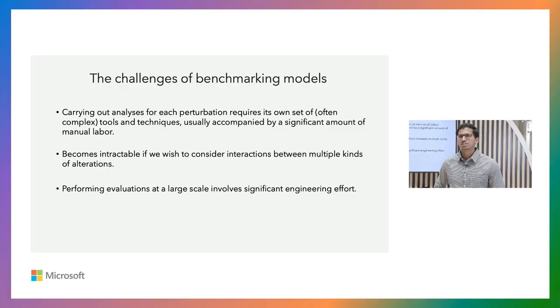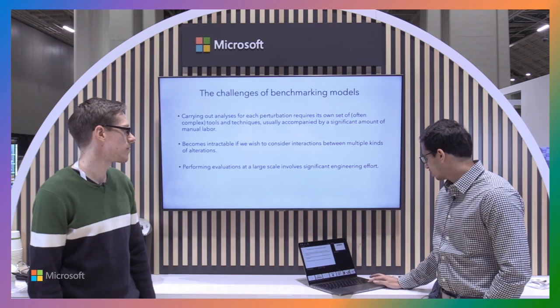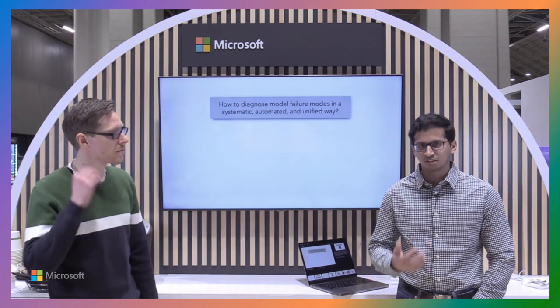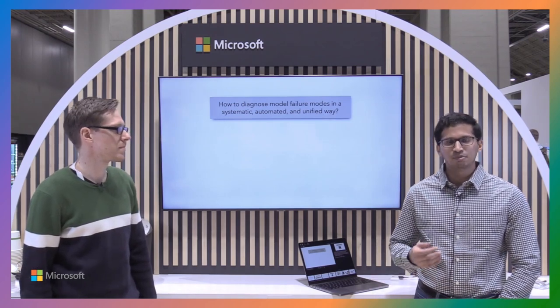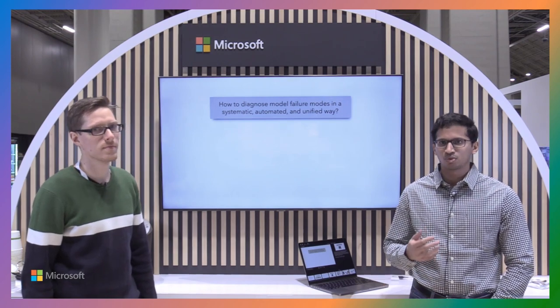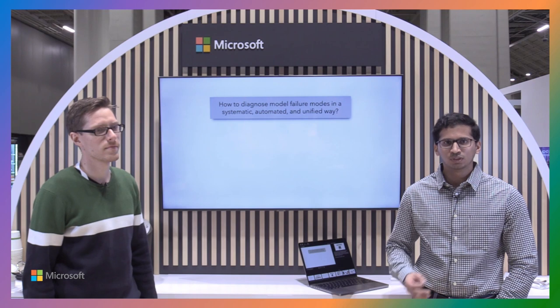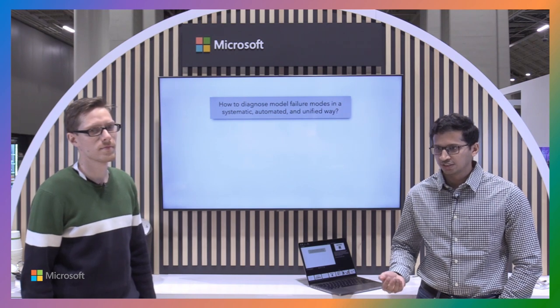And finally, we would want to perform these evaluations at a much larger scale because we care about big models that are applicable to many different kinds of objects and scenarios. This needs to be a large scale effort where we talk about many classes of objects and large models and performing inference on the fly. So this involves a significant amount of engineering effort. That leads us to the main question: how do we diagnose these model failures in a scalable, systematic, efficient, automated way? Ideally, we would want this to be part of any model training pipeline so every time we train a new computer vision model, we would understand what the vulnerabilities are and potentially augment our datasets to create better models.